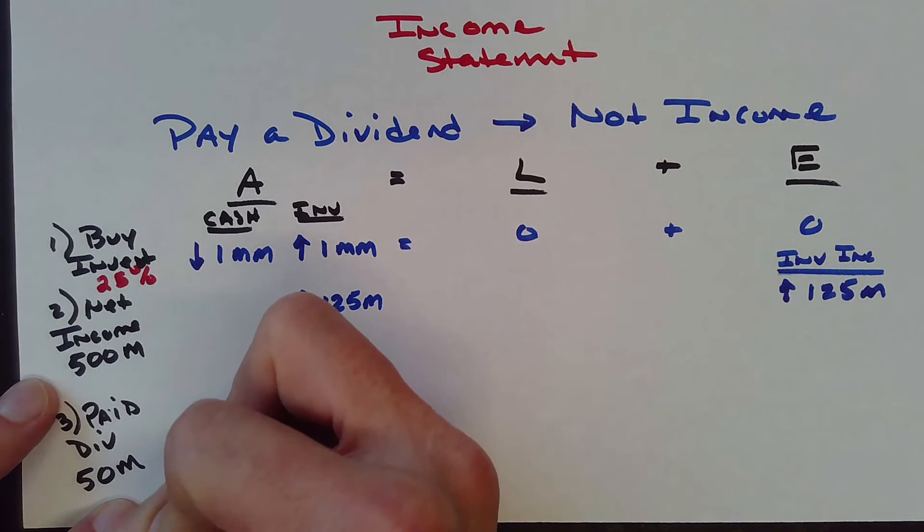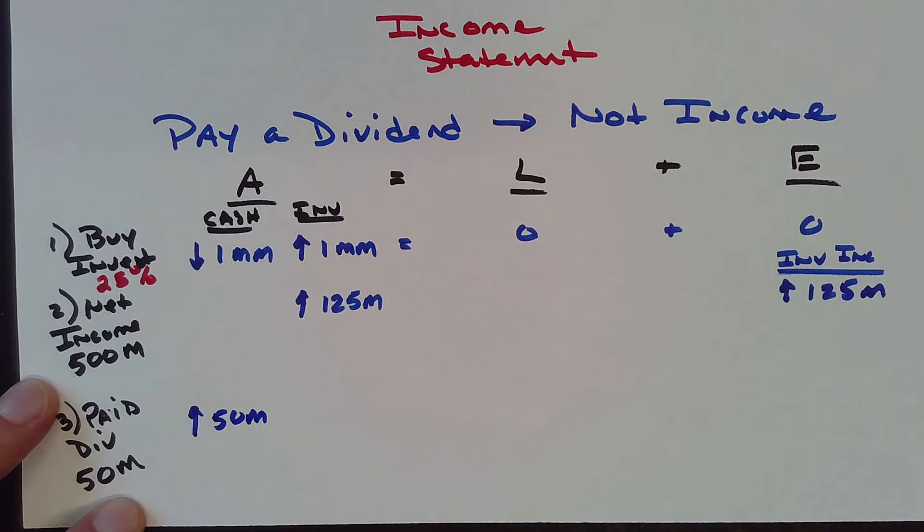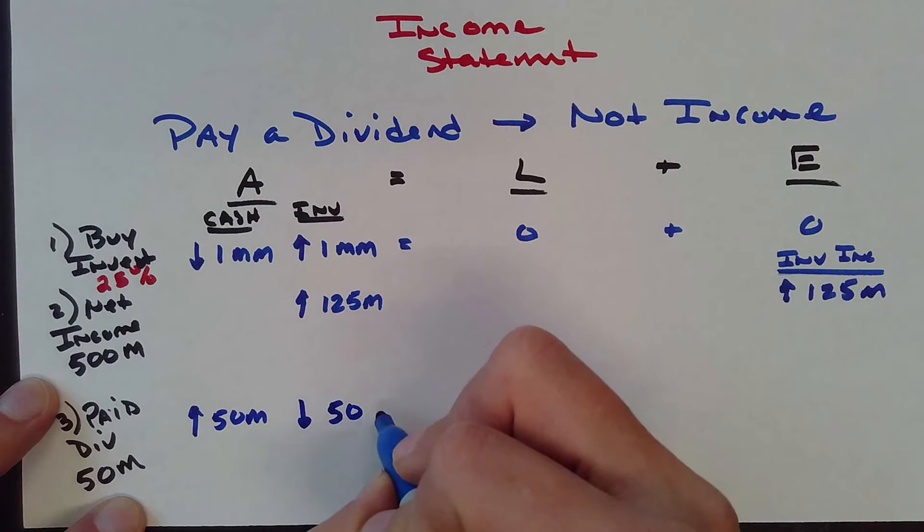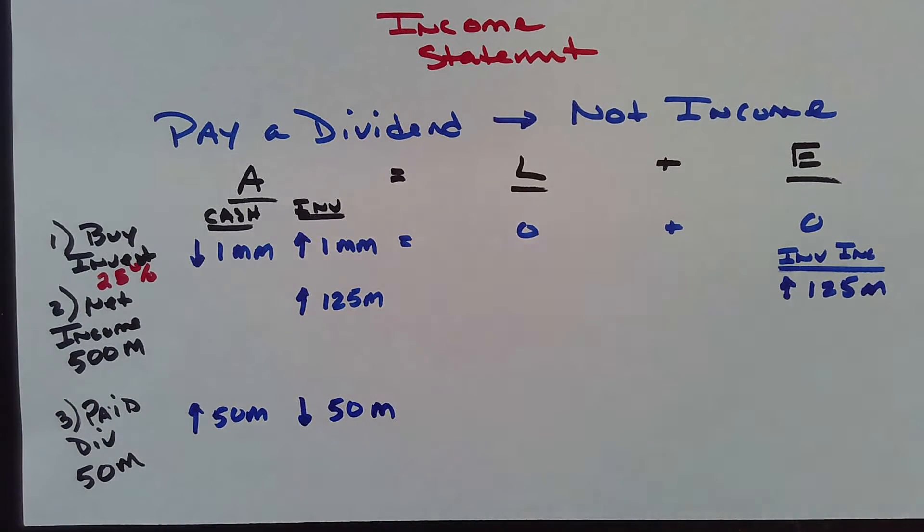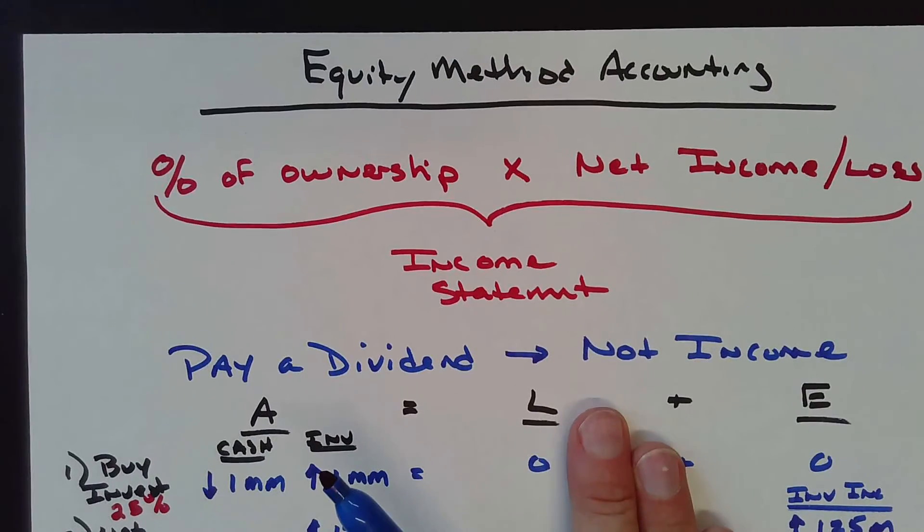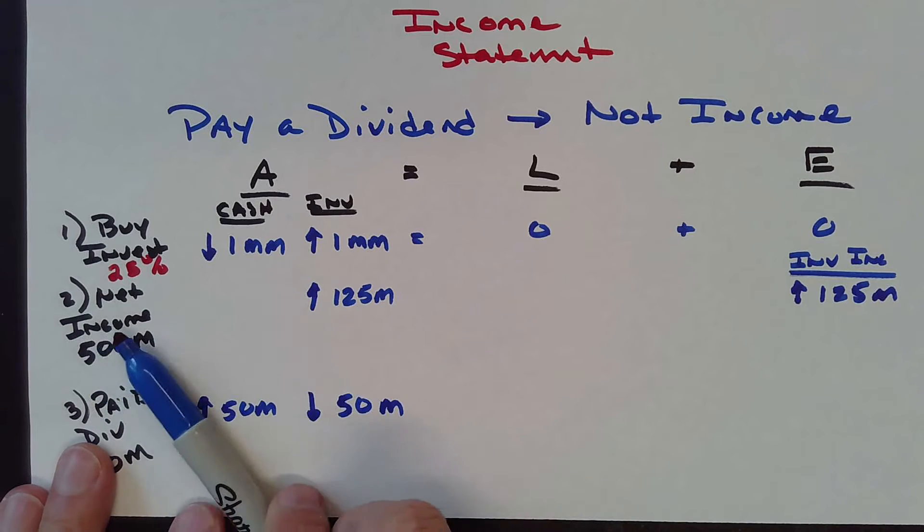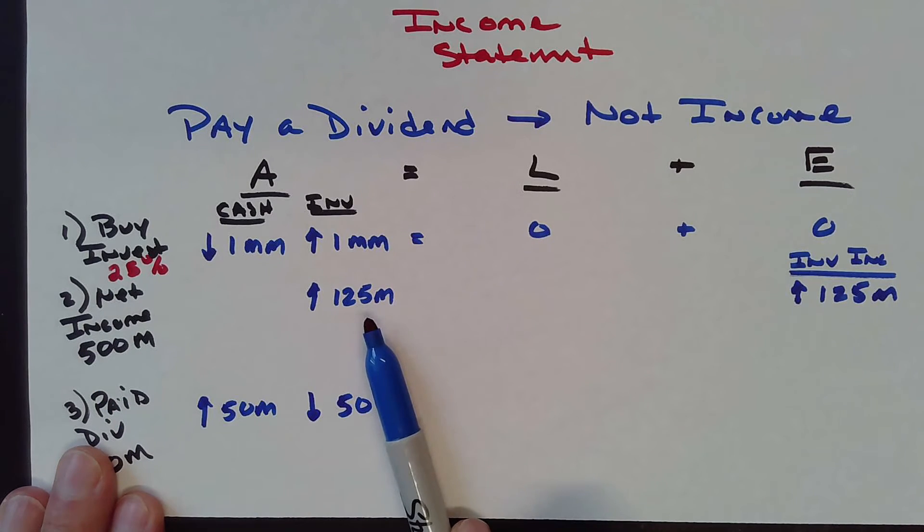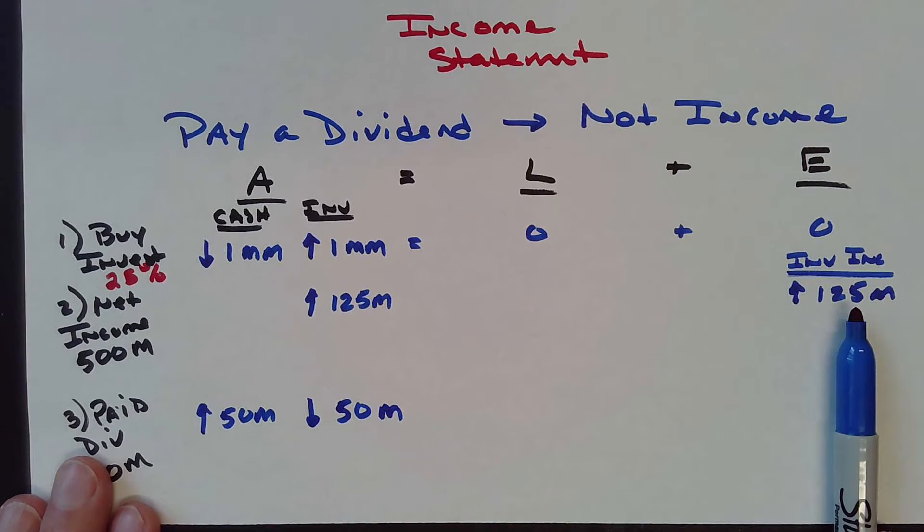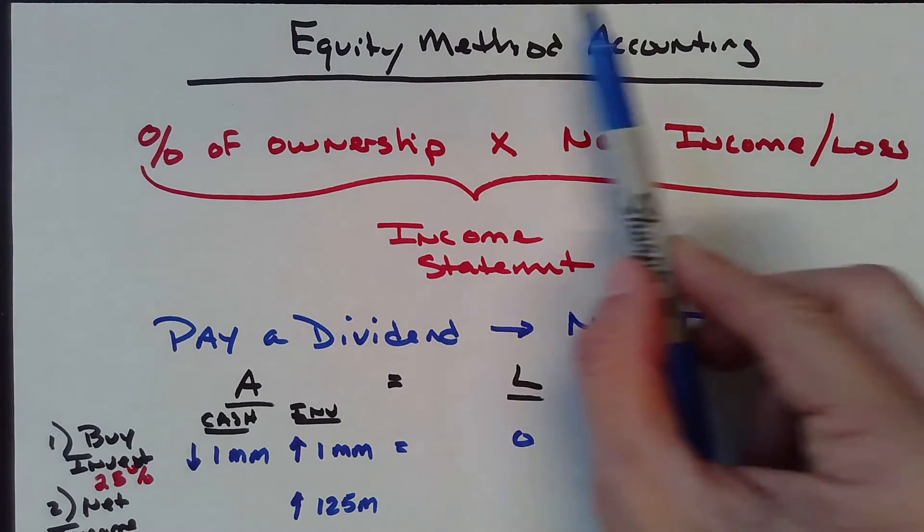So cash goes up $50,000 and the investment goes down $50,000. When doing equity method accounting, the only time anything hits earnings is your percentage share of their earnings.